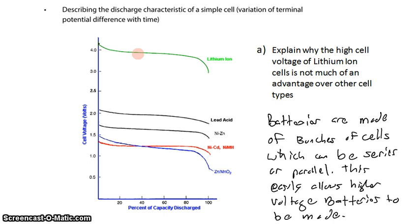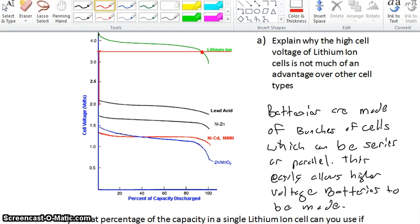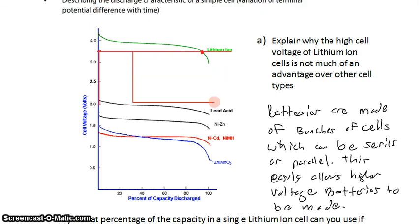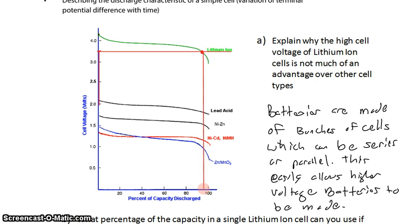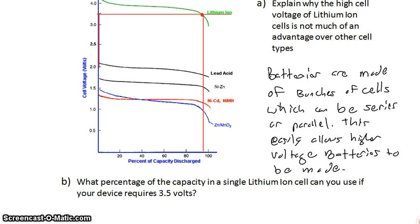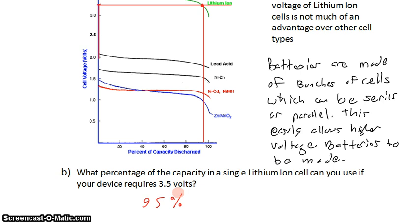But if we need this one cell to power a device at 3.5 volts, when does it cut out? Let's draw a horizontal line out, and we find that we run into trouble right here. As soon as we cross this point, the cell is producing less than 3.5 volts at its terminal, our device is going to shut off. What percentage is that? Drawing a straight line down, it looks to me to be about 95%. So we can use 95% of the energy stored in this battery before the voltage at the terminals will drop below 3.5 volts.